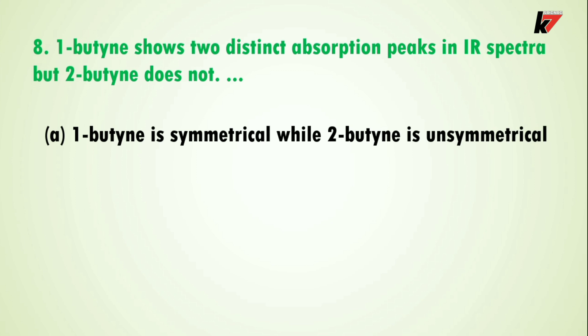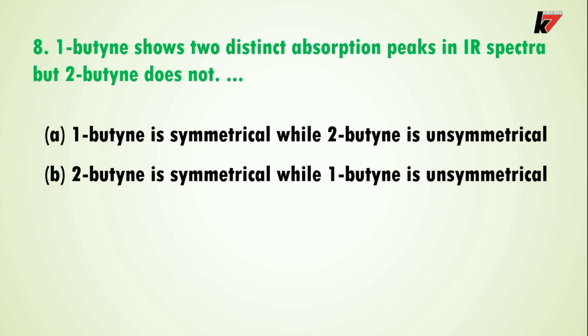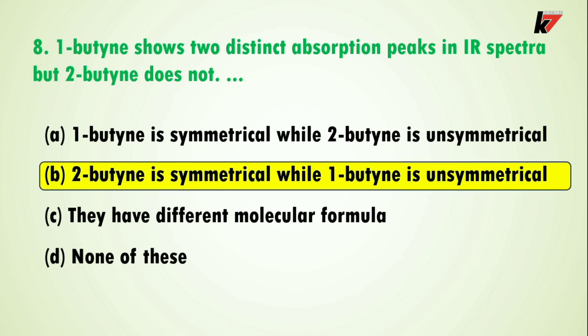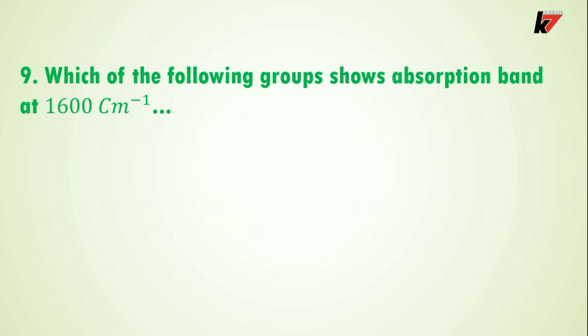Question 8: 1-butyne shows two distinct absorption peaks in the IR spectrum. The options are: 1-butyne is symmetrical while 2-butyne is unsymmetrical; 2-butyne is symmetrical while 1-butyne is unsymmetrical; they have different molecular formulas; none of these. The correct answer is option B: 2-butyne is symmetrical while 1-butyne is unsymmetrical. Because 2-butyne is symmetrical, it shows only one IR peak, not two.